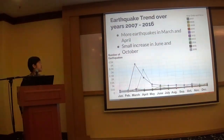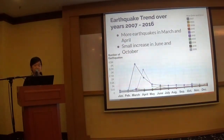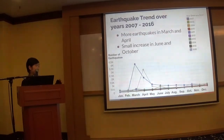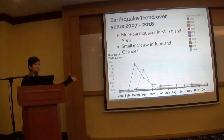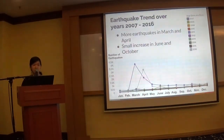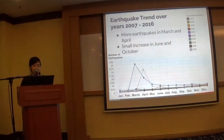Moving on, this is the most recent 10 years, from 2007 to 2016. There are more earthquakes in March and April, as well as a small increase in June and October. From all this data, we can tell that these months are the times of year when we will need to be prepared for more earthquake occurrences than other months.